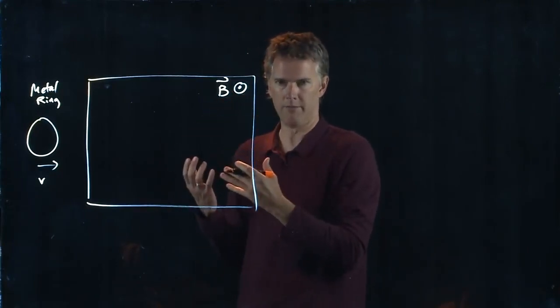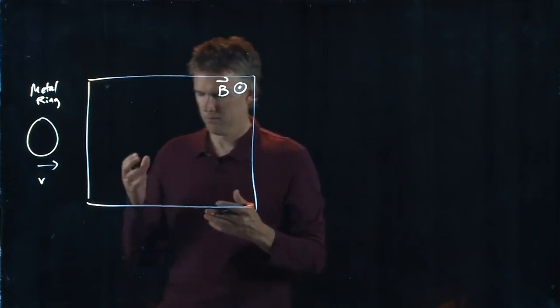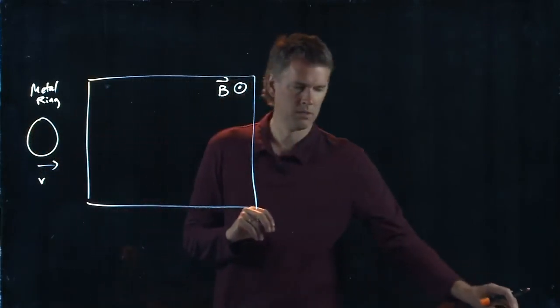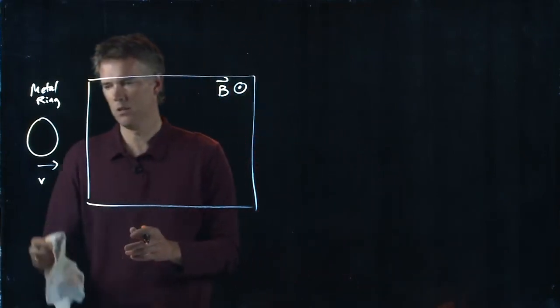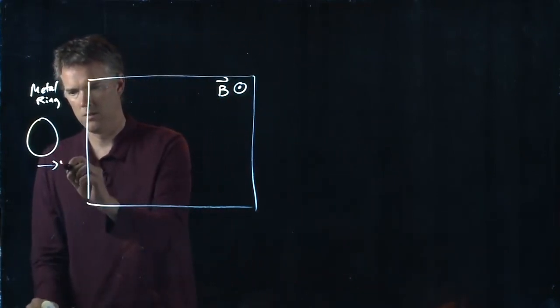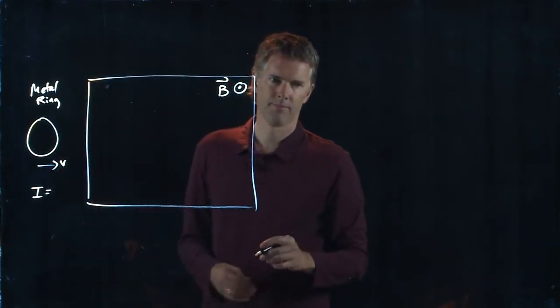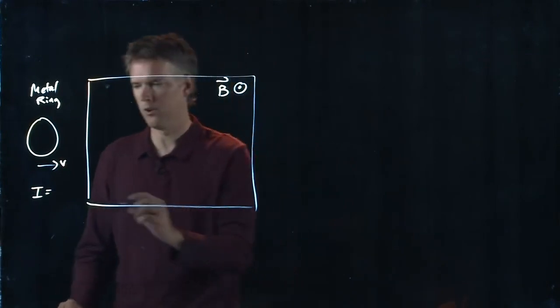There's going to be current that develops in the ring. Now, before it gets to the magnetic field region, what's the current in the ring? No current, right? Current is zero.